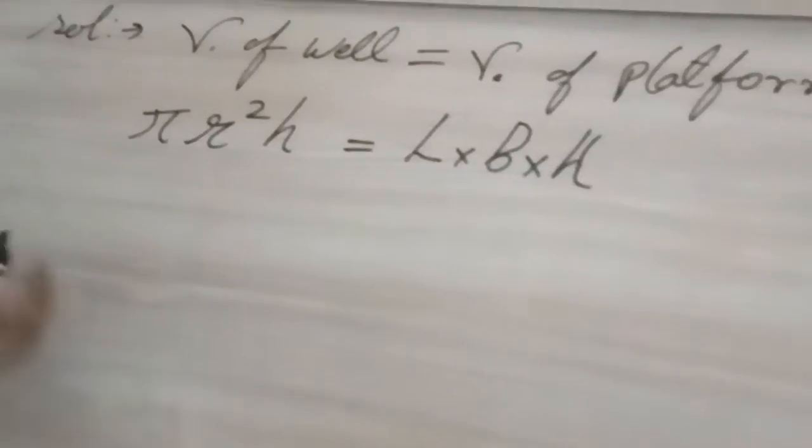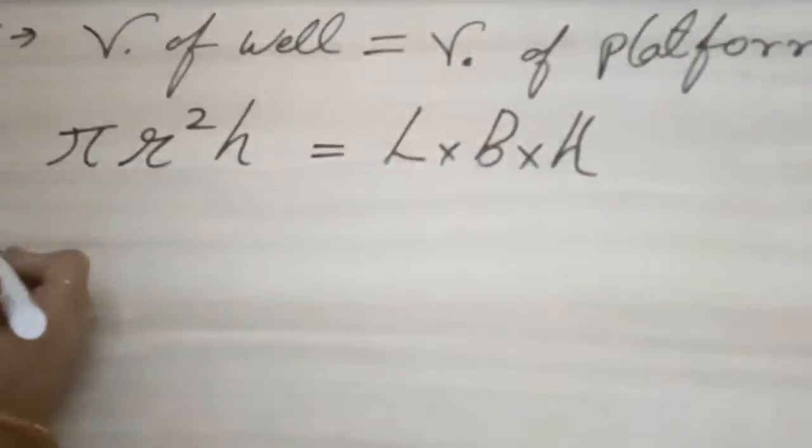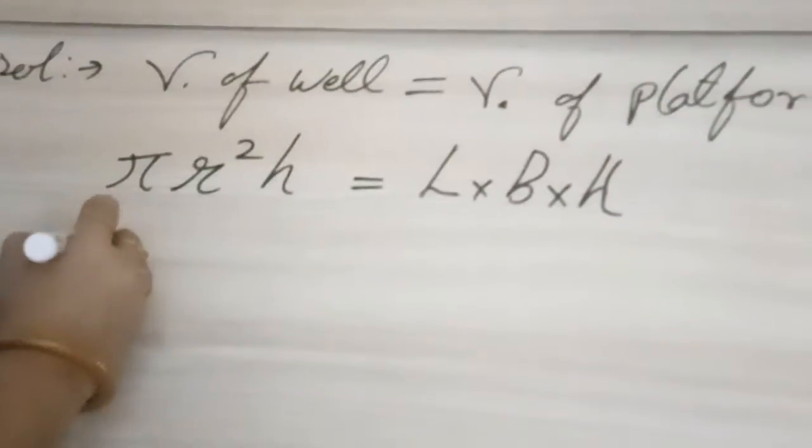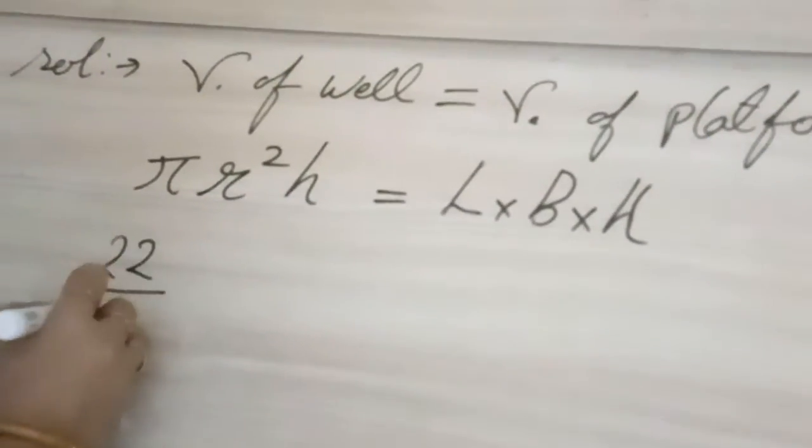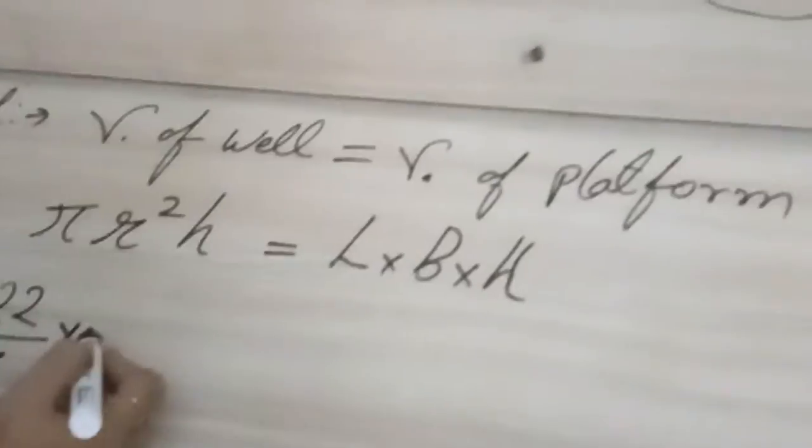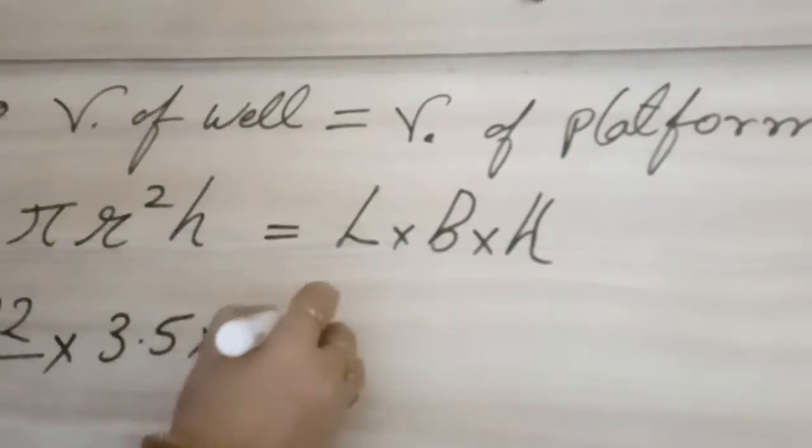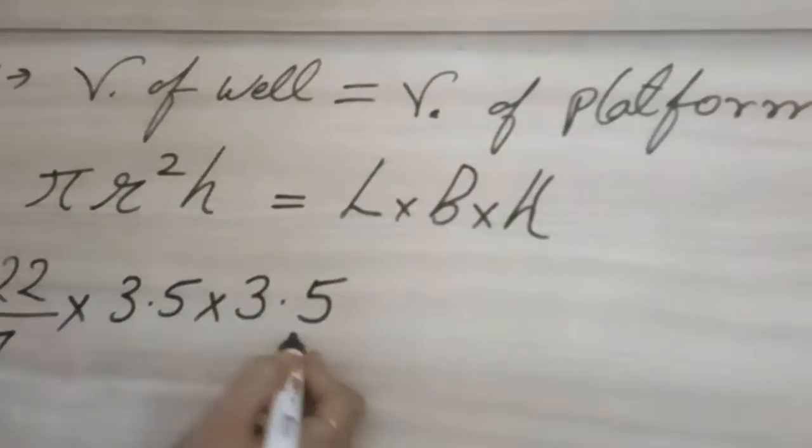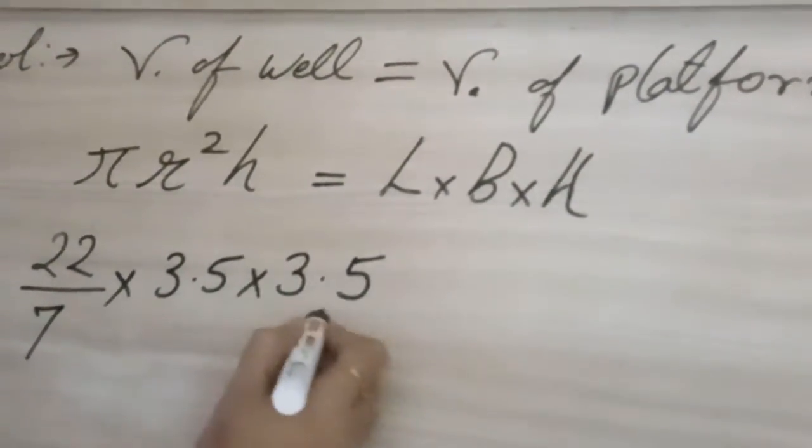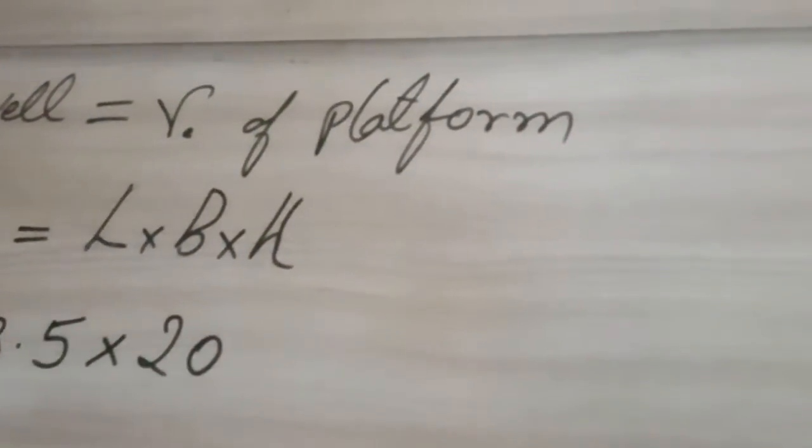Now we will put the values. So what value pi? It is not given in the question. When something is not given in the question, value of pi will obviously be 22 by 7 into r square radius. They have given 7 meter diameter and we have converted that into radius. So 3.5 into 3.5 into 3.5. Height, height they are telling 20 meter.